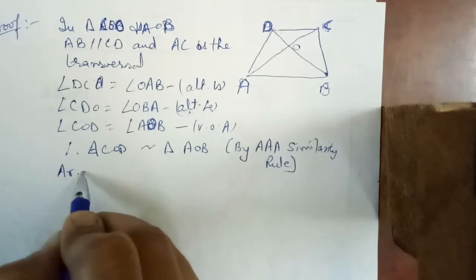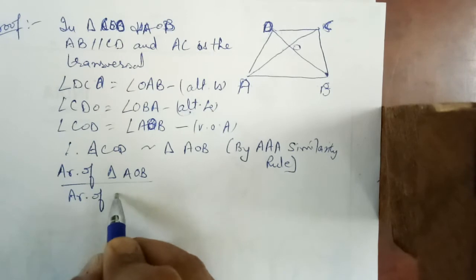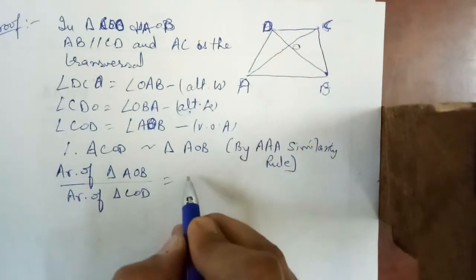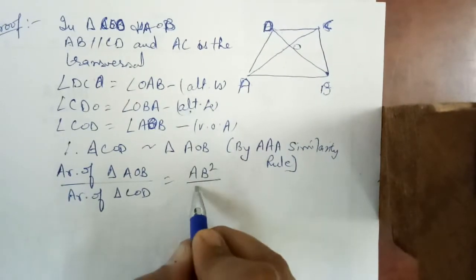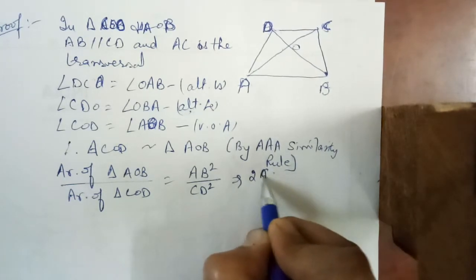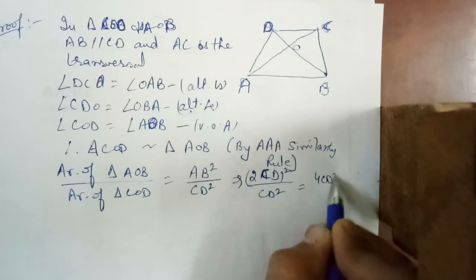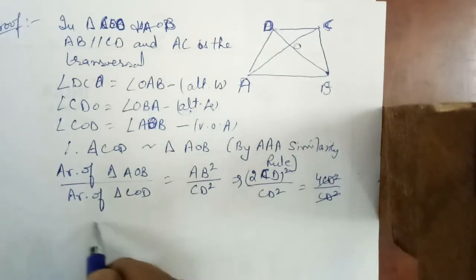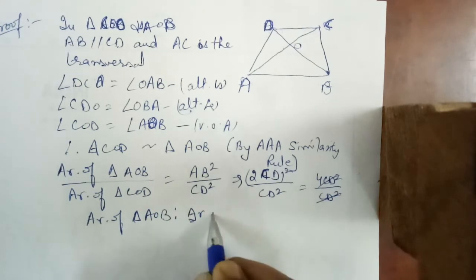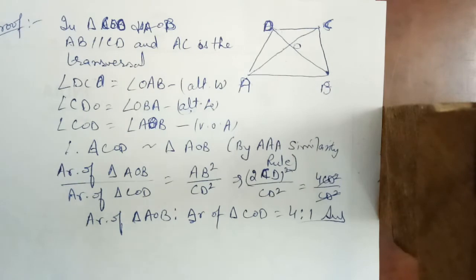Since the triangles are similar, area of triangle AOB by area of triangle COD equals AB squared by CD squared. Since AB is equal to double of CD, this becomes (2CD)² by CD², which is 4CD² by CD². The CD² cancels, giving area of triangle AOB to area of triangle COD equal to 4 ratio 1. This is the answer.